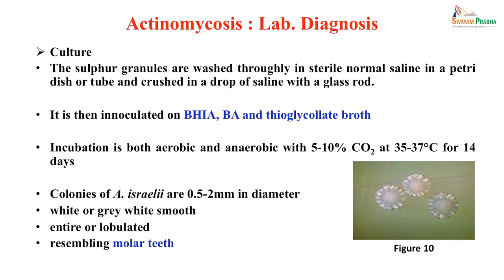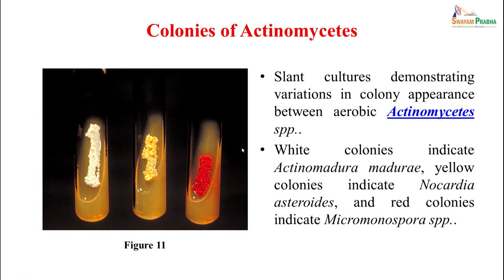Colonies of A. israelii are 0.5 to 2 millimeters in diameter, white or grayish-white, smooth, with entire or lobulated edges that resemble molar teeth. For other species of actinomycetes, they produce different colored colonies: white colonies are produced by actinomadura, yellow colonies by nocardia, and red colonies by micromonospora, which we will be talking about later.